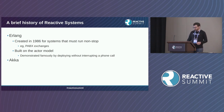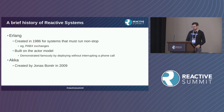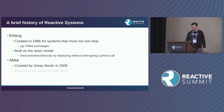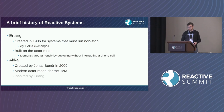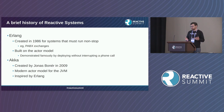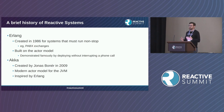Moving on to more modern times, Akka was developed by Jonas Bonér, who we heard earlier today, and it's a modern actor model for the JVM inspired heavily by Erlang. So we've got these concepts of actors, of message passing, of being able to fail independently, of being able to be deployed independently.